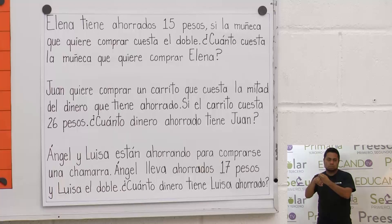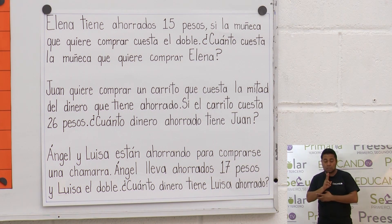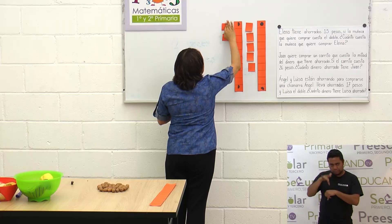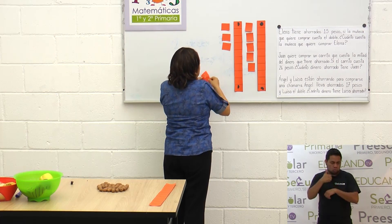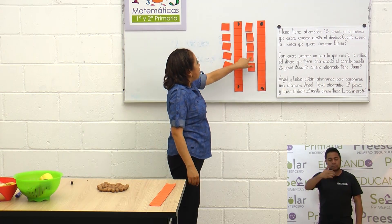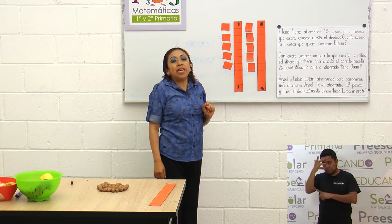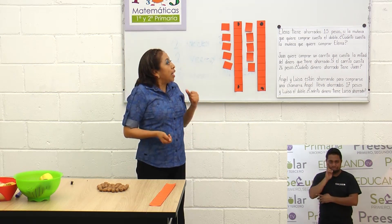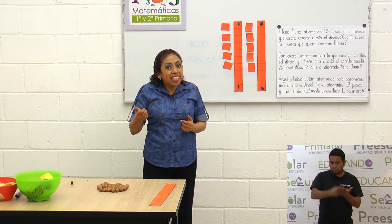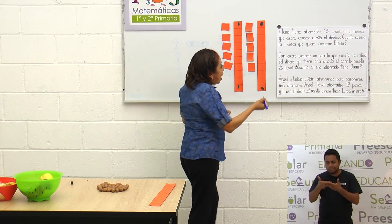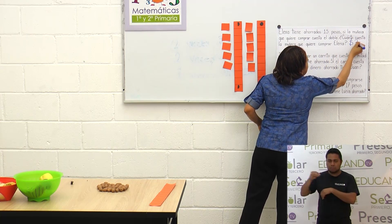Vamos a comprobar que realmente hayamos hecho bien nuestro trabajo. Tenemos diez, más diez, veinte, más diez — treinta. Y entonces comprobamos que efectivamente el doble de quince es treinta. ¿Cuánto cuesta la muñeca que quiere comprar Elena? Cuesta treinta pesos.